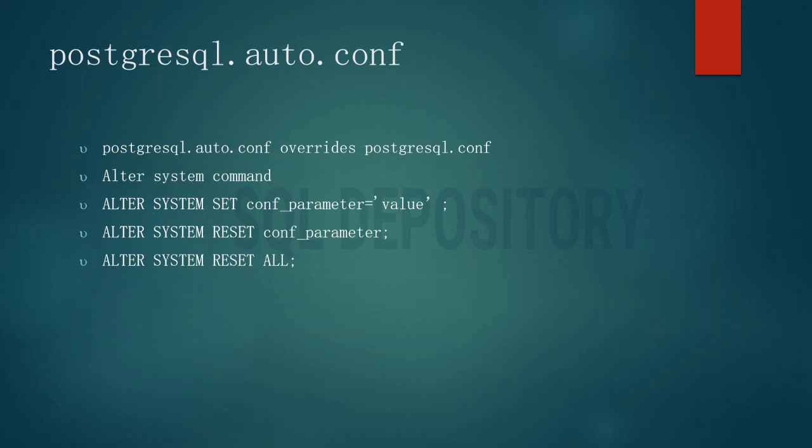It works with the ALTER SYSTEM command. The syntax is: ALTER SYSTEM SET configuration_parameter = value. To reset a parameter you write ALTER SYSTEM RESET config_parameter, and to reset all config parameters from postgresql.auto.conf you can use ALTER SYSTEM RESET ALL.